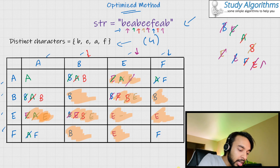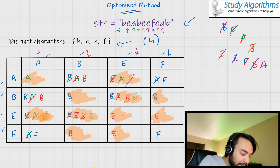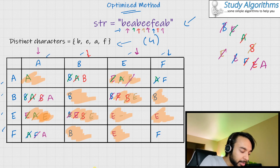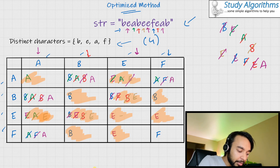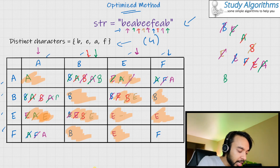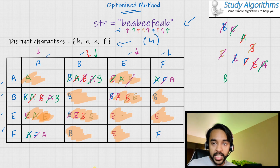Moving on to letter A: I cannot have an A after A, so that cell is eliminated. I can have an A after B, so I keep that. The next row is eliminated. I can have an A after F, so that row stays intact. Similarly for the column, the first row has been removed, I can have an A here, the third column has been removed, and I can have an A there. Doing this for the last character B: I look at column B, I can have a B in the valid row, and all the other three rows have been ignored. With the row, I can have a B here and all other columns have been ignored. Now we have completely parsed the string and eliminated all cases that cannot be true.